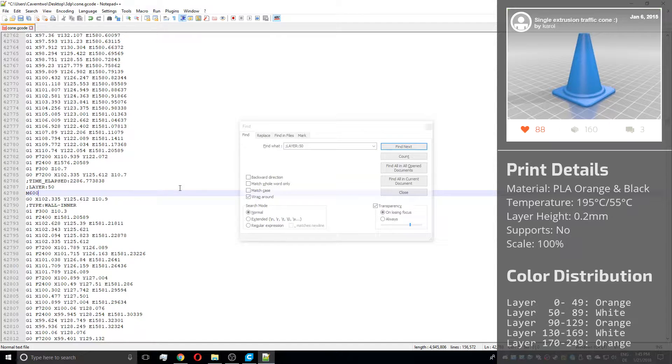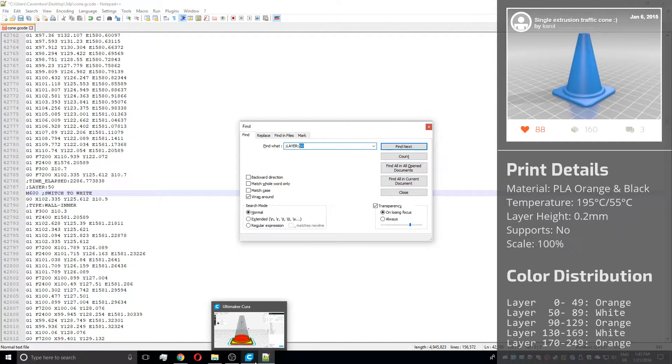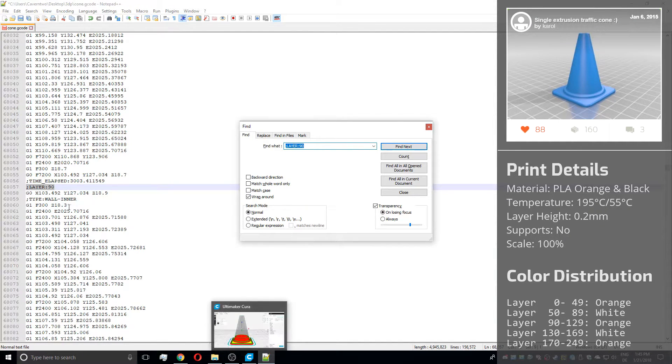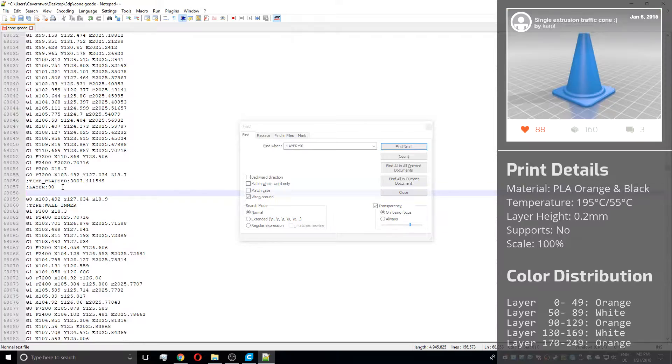Remember, we need to add a M600 command to initiate a filament change, which is what we are going to do. A semicolon just describes a comment, so don't worry about it. Once I've added all four M600s, I save the file and copy it onto the SD card, ready for printing.